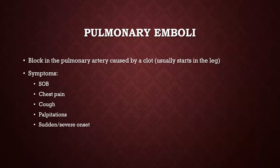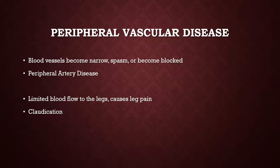Pulmonary emboli occur when the clot moves into the pulmonary artery, causing a blockage — which is very serious. Symptoms include a very sudden onset of shortness of breath, sudden chest pain, a dry hacky cough, and heart palpitations. The classic picture is a patient who just got back from surgery, life seems fine, and then suddenly has onset of shortness of breath — that's when your brain should go to pulmonary emboli.